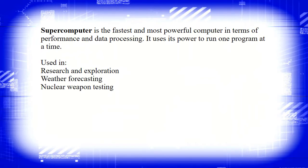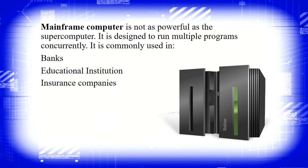The supercomputer uses its power to run one program at a time. It is used in research and exploration, weather forecasting, and nuclear weapon testing. Next, we have the mainframe computer. It is not as powerful as the supercomputer, but it is designed to run multiple programs concurrently. It is commonly used in banks, educational institutions, and insurance companies.